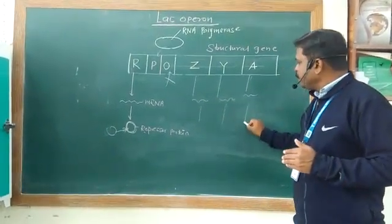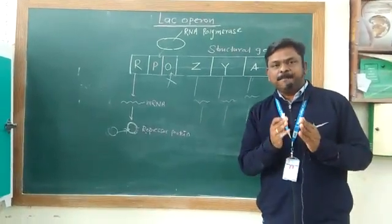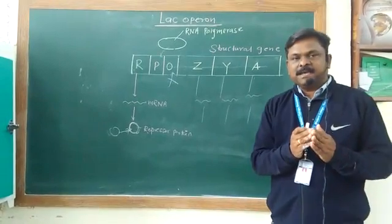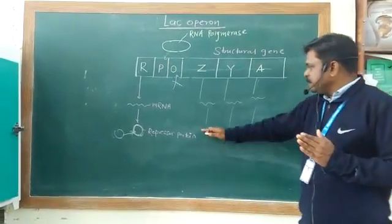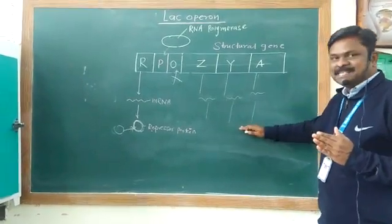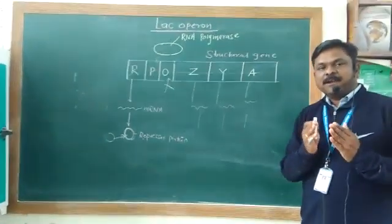And this messenger RNA is translated into enzymes. There are three types of enzymes: the permease, beta-galactosidase enzyme, and the beta-galactosidase transacetylase enzymes. And all these enzymes are required for lactose degradation.